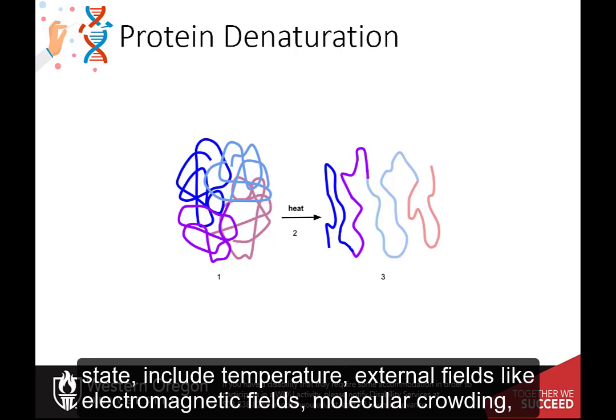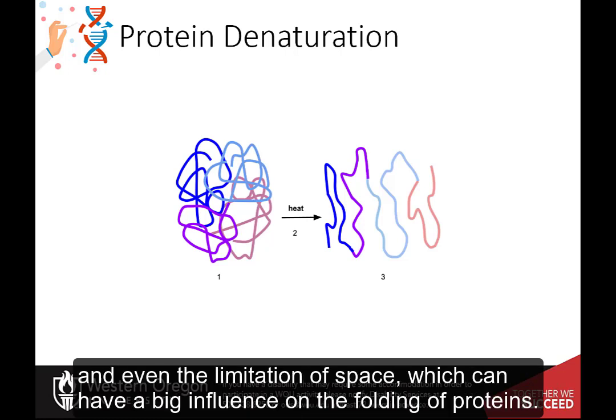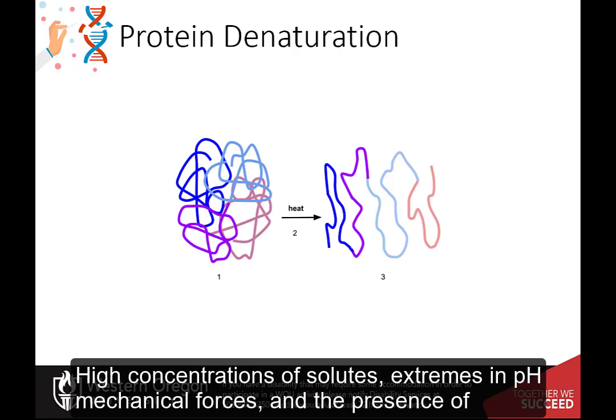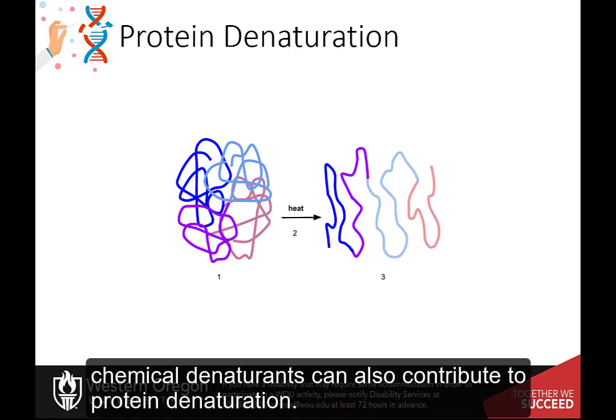The external factors involved in protein denaturation or disruption of the native state include temperature, external fields like electromagnetic fields, molecular crowding, and even the limitation of space, which can have a big influence on the folding of proteins. High concentrations of solutes, extremes in pH, mechanical forces, and the presence of chemical denaturants can also contribute to protein denaturation.